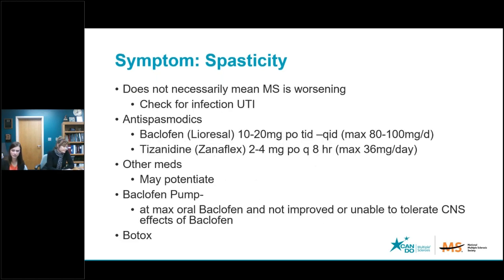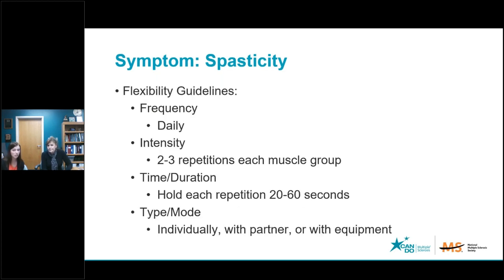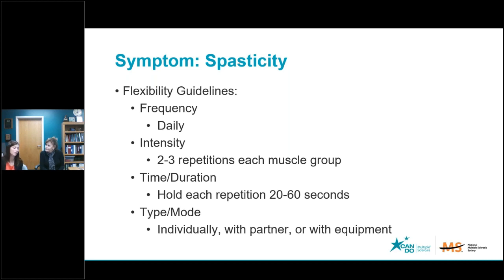We get the best management of spasticity when it is coupled with stretching. Here are some stretching and flexibility guidelines — you really need to work with your rehab team to identify those muscle groups that need to be stretched, to what extent, and in the best manner, whether individually, with a partner, or with equipment. Some examples: if you have drop foot, a calf stretch for the muscle on the back of the lower leg can be really helpful. Or if you have trouble swinging your leg through with walking, it may be spasticity or tightness of the hamstring muscle on the back of the thigh limiting that ability to advance or swing the leg through. Your rehab team can help dissect that and determine where it needs to be addressed.